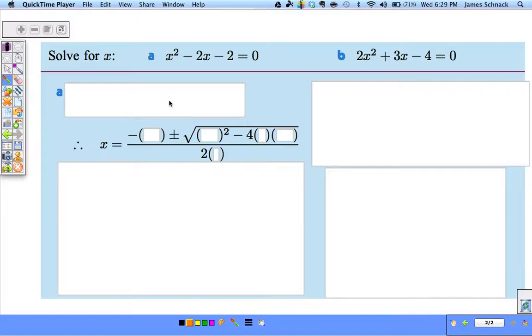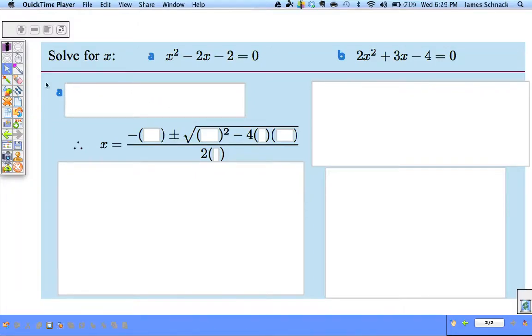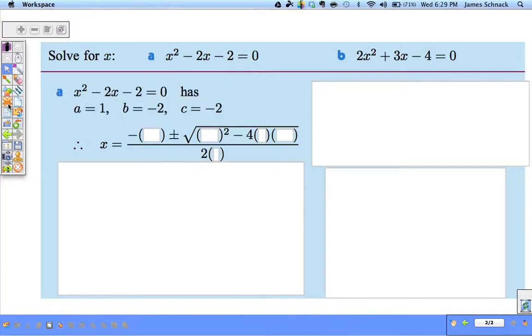Parentheses help me not make mistakes with signs. So, what are our a, b, and c? We have to identify them first. The coefficient of x squared is our a, so a is 1. Coefficient of x is b. It's negative 2. And c would be the constant, which is also negative 2. We're going to plug those into these empty spaces. Pause the video and write down where you think a, b, and c go.